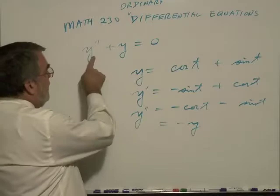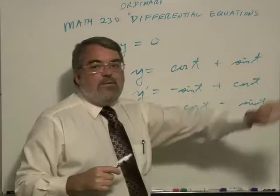which ends up being the negative of the function. So the second derivative equals the negative of the function. If we plug it in here, everything is going to cancel. We'll get zero. So this function is a solution to that differential equation, isn't it?